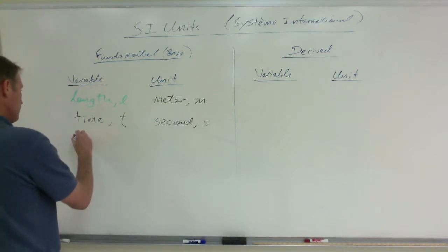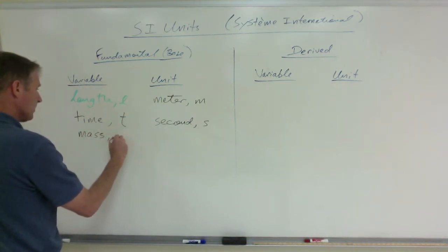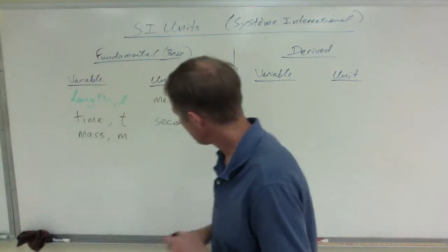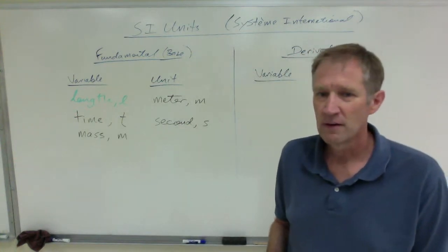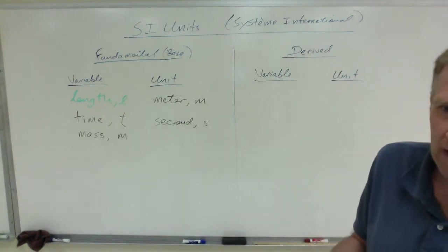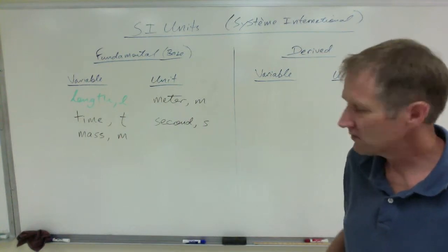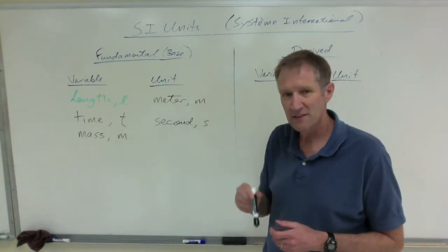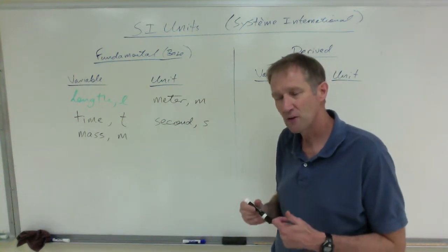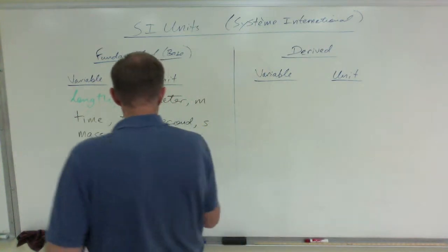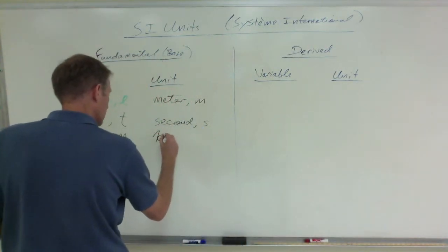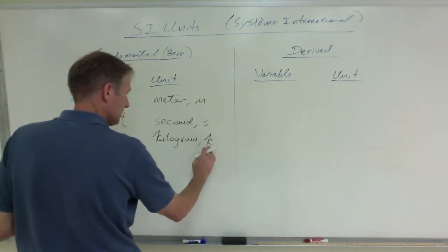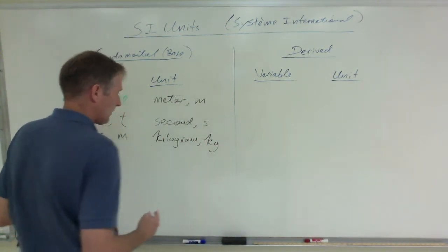Another one is mass. We abbreviate that with the symbol lowercase m. And this one's surprising. You might think that it would be the gram, but it's not. The SI unit, the SI fundamental unit for mass is the kilogram. You must be in kilograms before you can do anything else with it. So kilogram, lowercase k because it's an SI prefix kilo, and then g for grams.